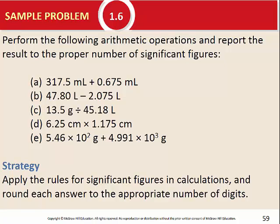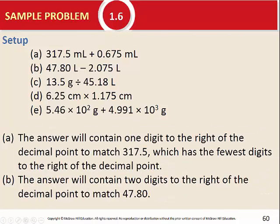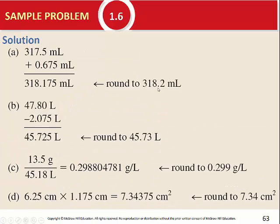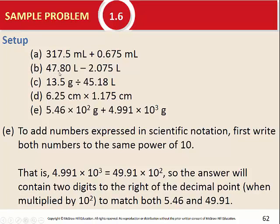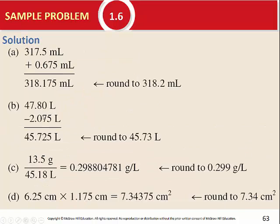Let's perform arithmetic operations and report to the proper number of significant figures. Problem A is addition — round by decimal places. One decimal place and three decimal places, so round to one decimal place: the answer is 318.2. Problem B is subtraction — two decimal places and three decimal places, round to two: the answer is 0.73.